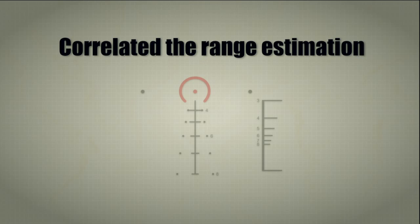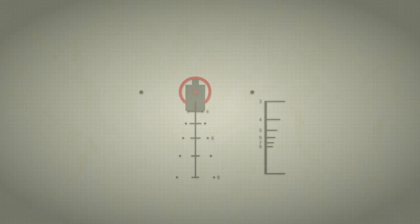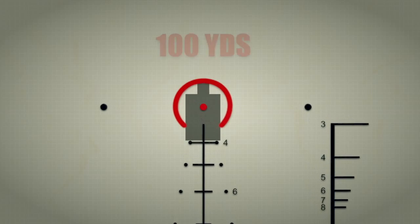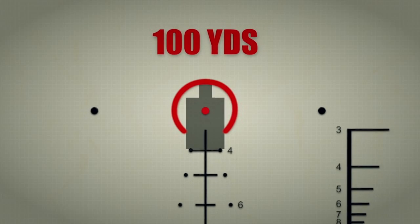We have correlated the range estimation to match the bullet drop compensation. First we must establish a 100 yard zero in the center dot.